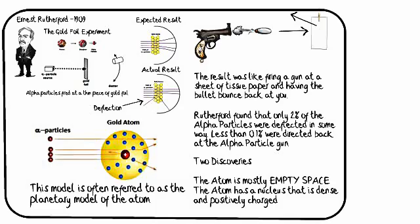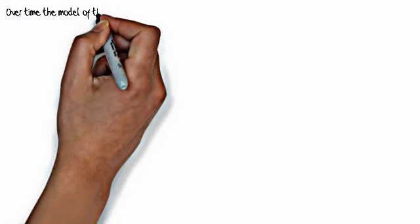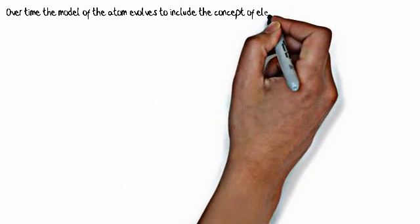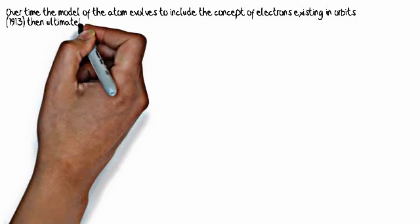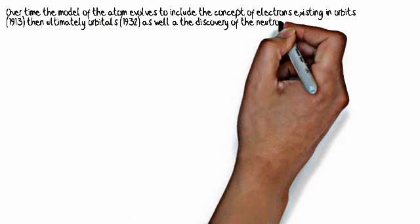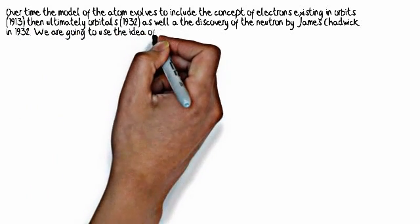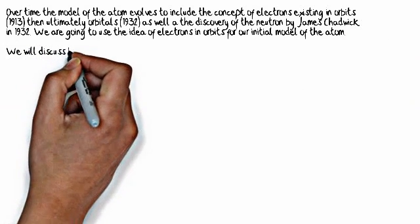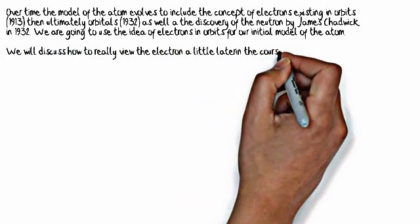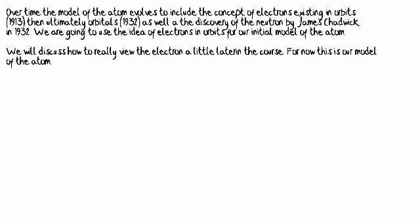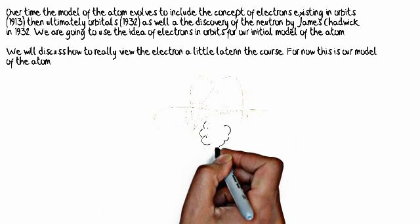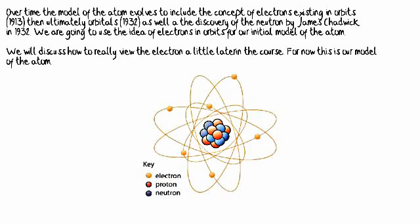So over time, the model of the atom evolves to include the concept of electrons existing in orbits. That happened in 1913 with the work of Niels Bohr and ultimately orbitals in 1932, as well as the discovery of the neutron by James Chadwick in 1932. We are going to use the idea of electrons in orbits for our initial model of the atom. We're going to have a nucleus at the center which is going to contain protons and neutrons, and we're going to have electrons on the outside orbiting it. And this is what we're going to call the planetary model of the atom, even though it's slightly different than what Rutherford referred to. This is going to be the Rutherford planetary model of the atom.